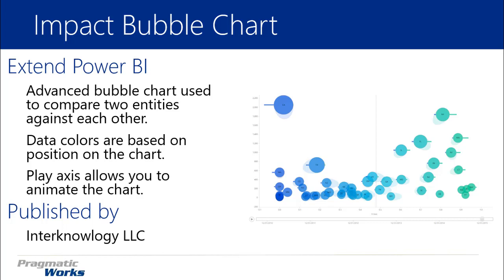Say for example you wanted to see the overall sales for an organization, but then you wanted to compare the East region versus the West region. You can bring in those two additional measures and that would show in a bar that goes through the bubble. The values on the left and right of the bubble are the two additional measures that you can bring in.